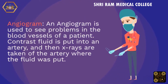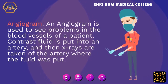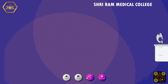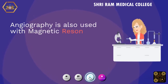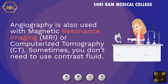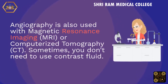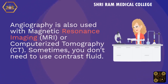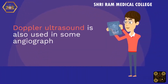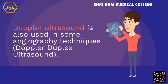Angiography: contrast fluid is put into an artery, and then X-rays are taken of the artery where the fluid was put. Angiography is also used with magnetic resonance imaging (MRI) or computerized tomography (CT). Sometimes you don't need to use contrast fluid. Doppler duplex ultrasound is also used in some angiography techniques.